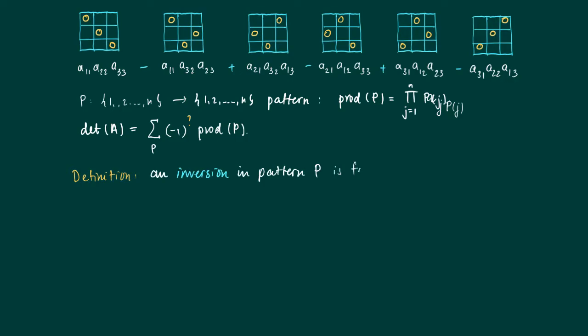But what determines whether such a product gets a plus or a minus? It depends on the number of inversions in a pattern. An inversion in a pattern is formed by a pair of indices i, j such that P(i) is larger than P(j) while i is smaller than j.